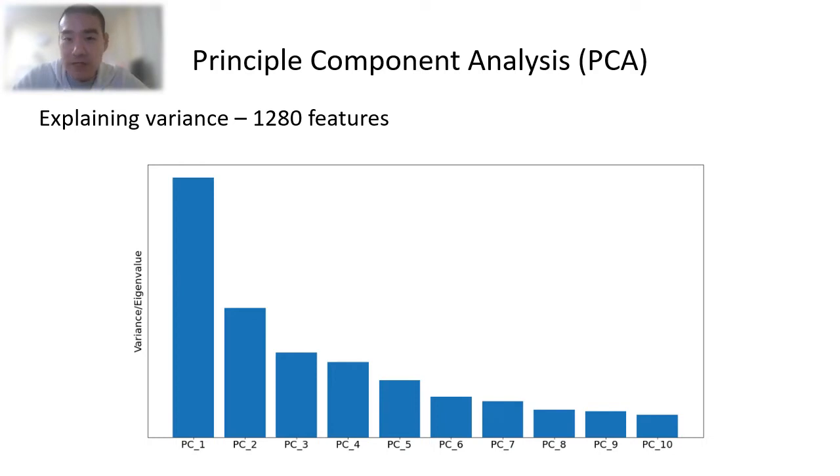If this is for visualization purposes, we can then take the first two or three Principal Components, use them as the X, Y, and Z axis, and plot the data. If PCA is an initial step for the data analysis, we will use this plot to decide until which component we will take for further analysis or modeling.